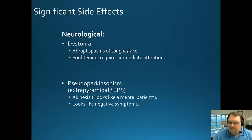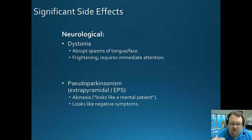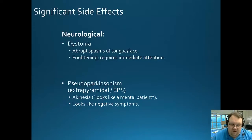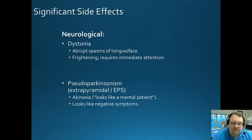The first notable side effect is dystonia — abrupt spasms of the tongue and face that often required immediate medical attention. There are also extrapyramidal side effects. Remember that dopamine is very much associated with movement — in Parkinson's, death of dopamine-producing cells leads to movement disorders. So a medication that reduces dopamine's effect can produce Parkinsonian-like symptoms. Akinesia is essentially a loss or impairment of voluntary physical movement — someone could be told to walk forward and simply be unable to do so.